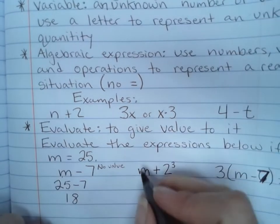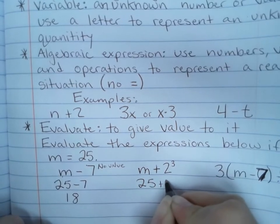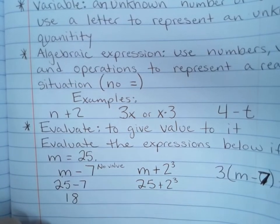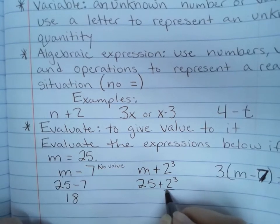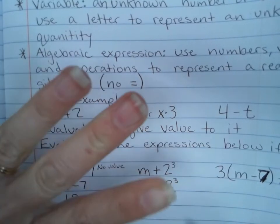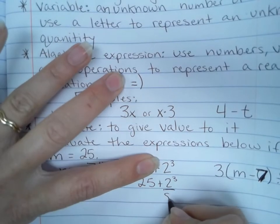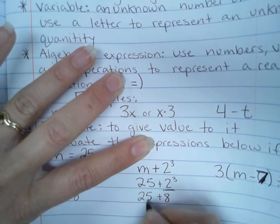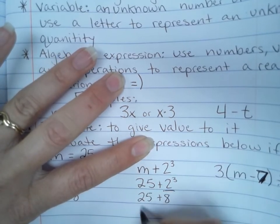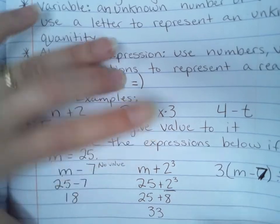Same idea here. 25 plus 2 to the third power. Order of operations, I have to do this first. So 2 to the third power means 2 times 2 times 2, which is 8, plus 25. 25 plus 8 is 33. It has a value.